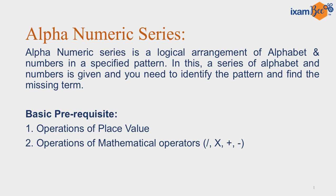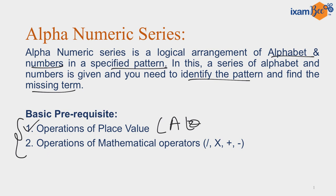Alphanumeric series is a logical arrangement of both alphabets and numbers arranged in a specified pattern. In order to find the correct answer, you need to identify that pattern and find the missing term by applying some logic. To master alphanumeric series, two concepts must be on your fingers: first is the operation of place value — you must know the place value of each of the 26 English alphabets A to Z — and second, you must know how to use the four mathematical operators: division, multiplication, addition, and subtraction.